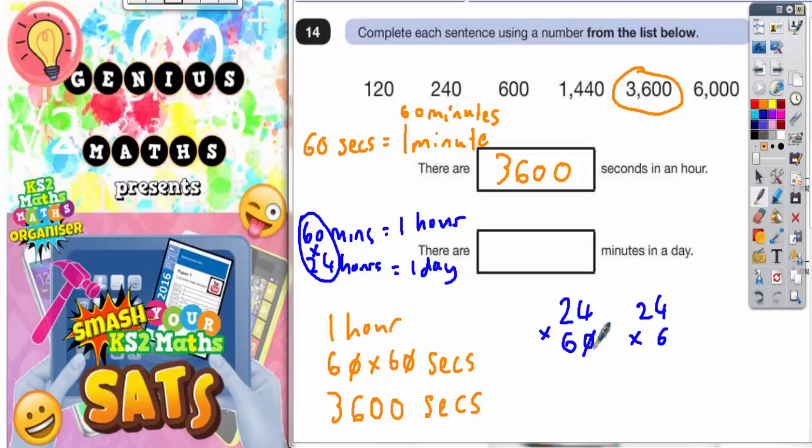6 times 4 is 24, put your 4 in, carry 2. So 6 times 2 is 12 plus that 2 is 14. So if 6 lots of 24 is 144...